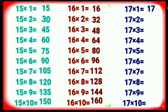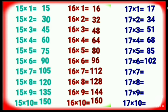Table of Seventeen. Seventeen ones are seventeen. Seventeen twos are thirty-four. Seventeen threes are fifty-one. Seventeen fours are sixty-eight. Seventeen fives are eighty-five. Seventeen sixes are one zero two. Seventeen sevens are one one nine. Seventeen eights are one thirty-six. Seventeen nines are one fifty-three.